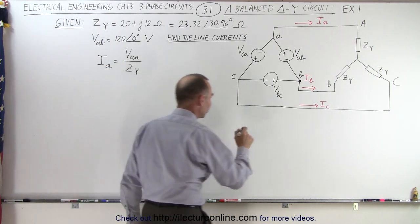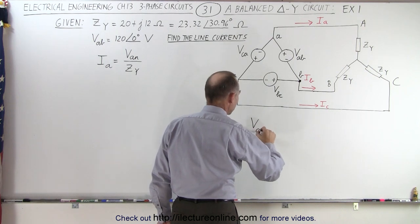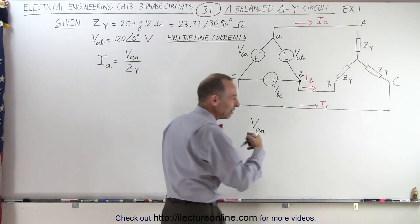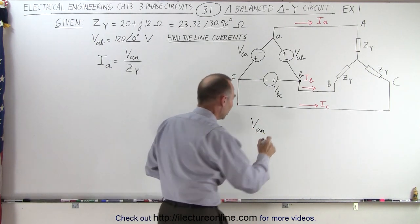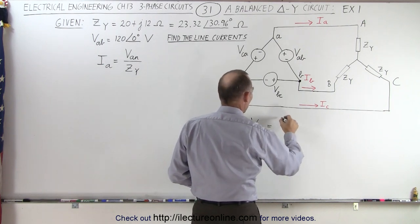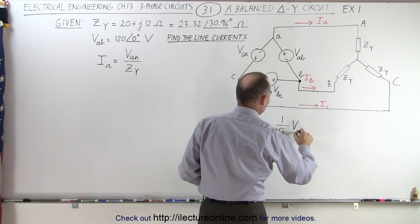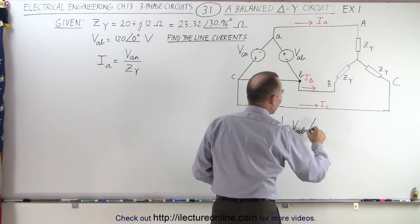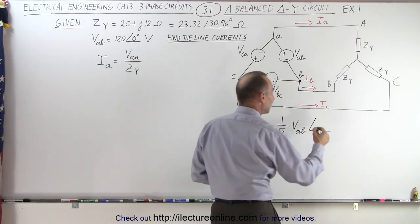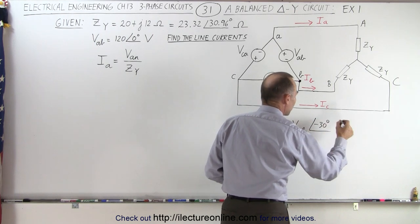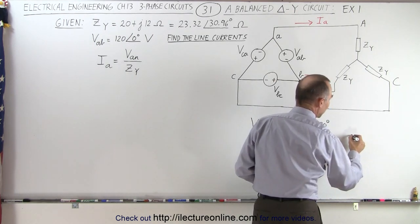Remember the relationship was that Van, the phase voltage of the equivalent circuit, was equal to 1 over the square root of 3 times the voltage from A to B with a phase angle difference of minus 30 degrees.